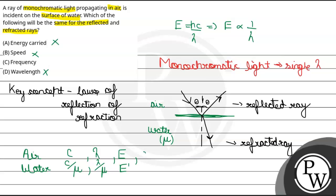But frequency जो है, यह air में भी mu रहता है और water में भी mu ही रहता है, यह change नहीं होता है frequency। So option C — frequency — is the correct answer. Hope you understood it well, best of luck.